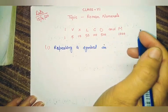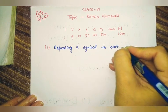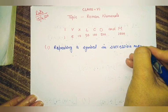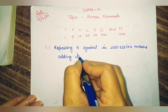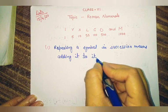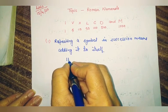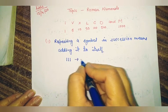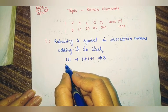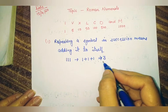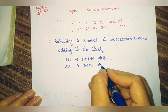The first rule is: repeating a symbol in succession means adding it to itself. For example, if we write I, I, I — that means I is repeated 3 times, which means 1 plus 1 plus 1, and we get the answer 3. Similarly, two times X means 10 plus 10 equals 20.